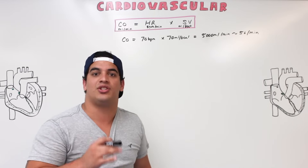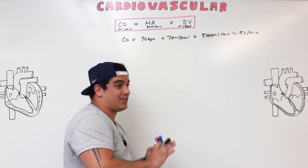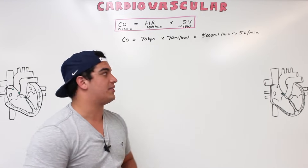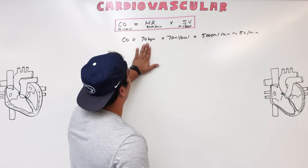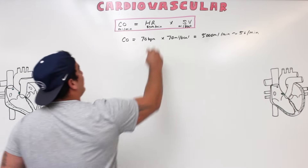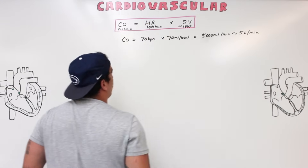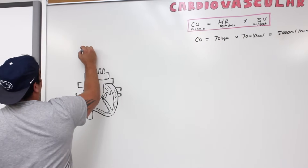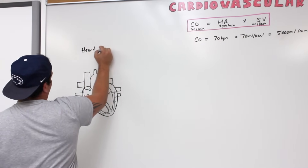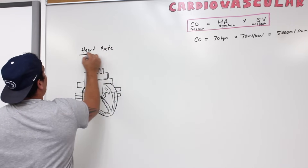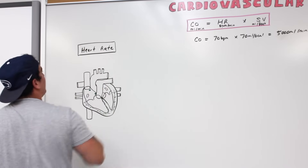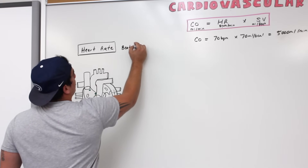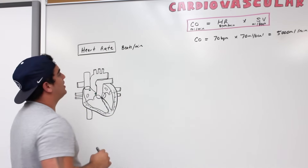So cardiac output equals heart rate times stroke volume, with units of milliliters per minute, generally around 5 liters per minute. We can increase it significantly during exercise or decrease it with parasympathetic innervation. Now let's break down heart rate and stroke volume separately, starting with heart rate on the left side.